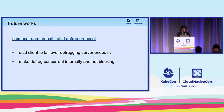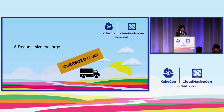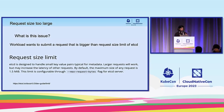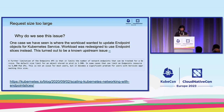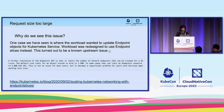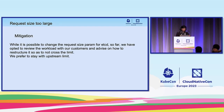That brings us to the last issue: request size too large. etcd has a limit on request size — the default is 1.5 MB, which is what we run with. Sometimes we see workloads that want to push more data through a single request. Typically it's a workload issue. For example, a customer using endpoint objects was updating a service that grew beyond 1.5 MB. This turned out to be a known upstream issue, and the solution was to use endpoint slices instead of endpoints. For mitigation, we prefer to stay with the upstream limit and help customers change workloads to match best practices.